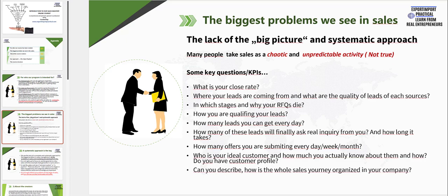So what is the biggest problem we are seeing today in the sales? The lack of the big picture and systematic approach is a widespread problem in companies big and small in different industries. Also, we see that many beginner sales professionals are taking sales as a chaotic and unpredictable activity, which is absolutely not true. And now I would like you to take some time and think about the following key questions and KPIs about your own company's sales.